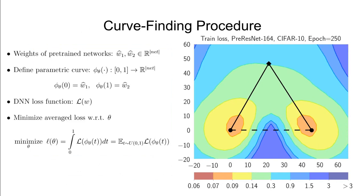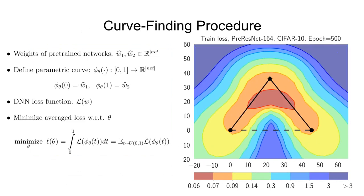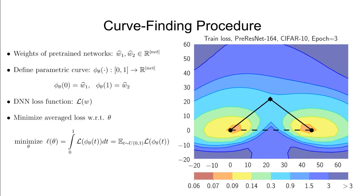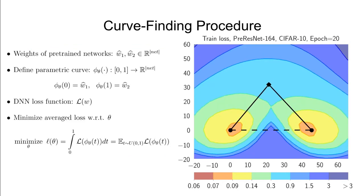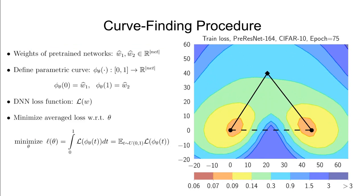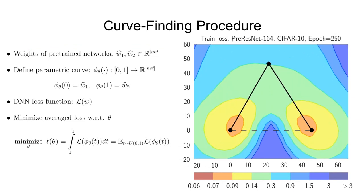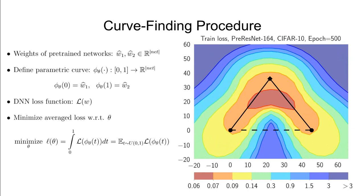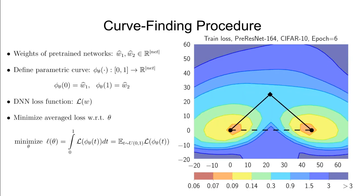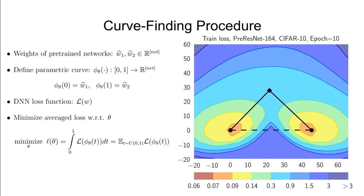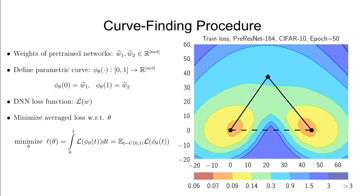We start by fixing two sets of DNN weights that will serve as the endpoints of the curve. We then choose a parameterization. For a polygonal chain, the curve is parameterized by the bend, which is a single point in the weight space. We define the new loss function as the expectation of the cross-entropy loss over the curve. At each step, we sample a point uniformly on the curve and use the gradient of the loss at the corresponding point to update the parameters of the curve with SGD.